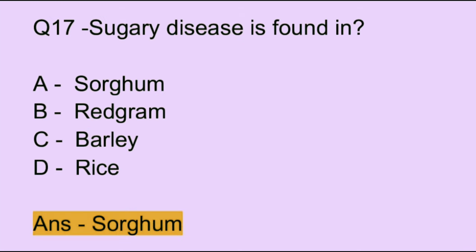Question number 17. Sugary disease is found in: Option A: sorghum. Option B: red gram. Option C: barley. Option D: rice. The correct answer is option A, which is sorghum.